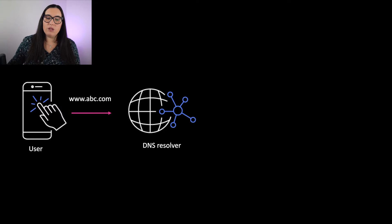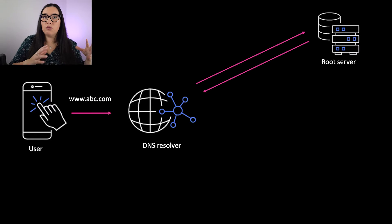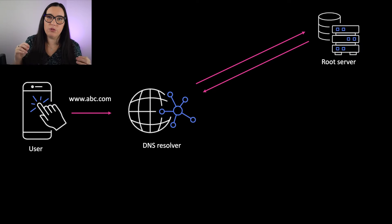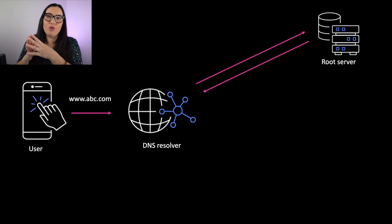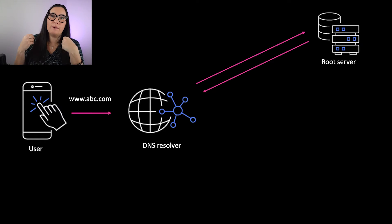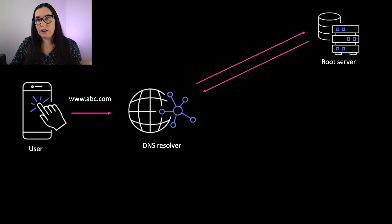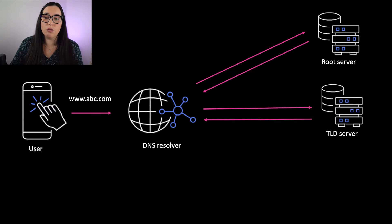Then the DNS resolver will contact the root namespace — the root server. There are only 13 in the world, though they are replicated around the world. Based on the end of the URL — .com in our case, but it can be .org, .fi, or whatever — it will send the recursive resolver to the right TLD server.